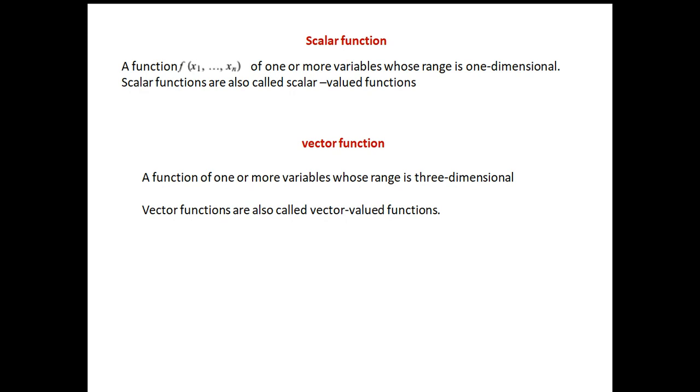So it is very important for us to understand which kind of a function we are using. Like in gradient, we are going for a scalar function. Whereas for divergence and curl, we need a vector function. Now scalar functions are also called scalar valued functions and vector functions are also called vector valued functions.